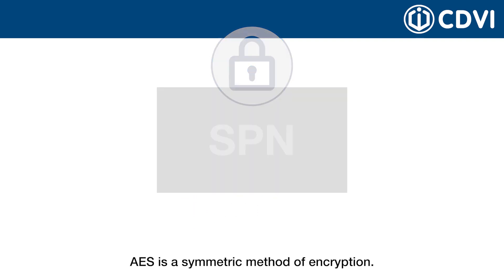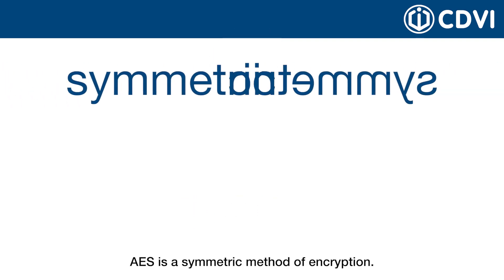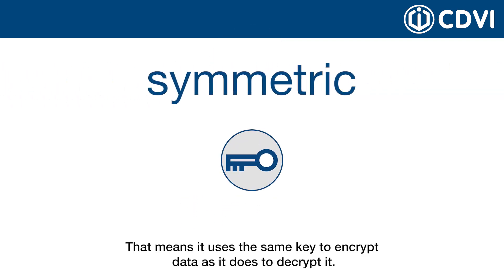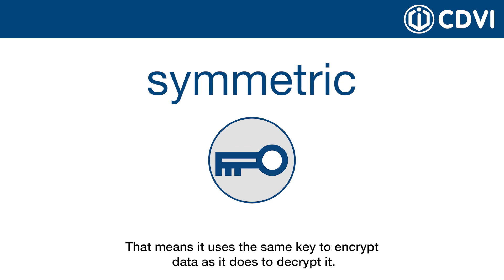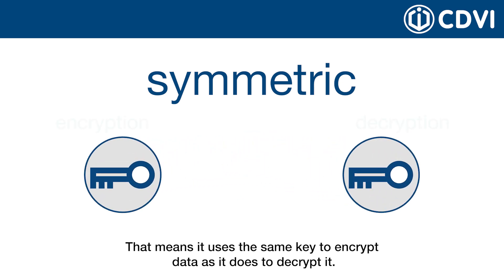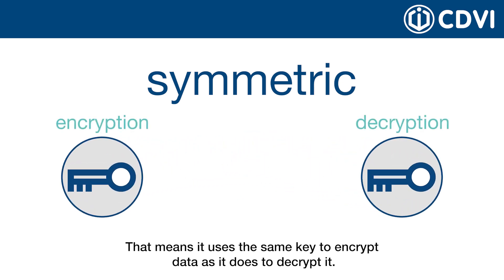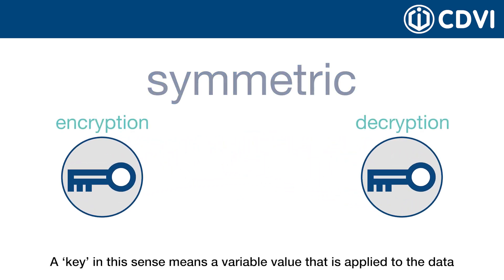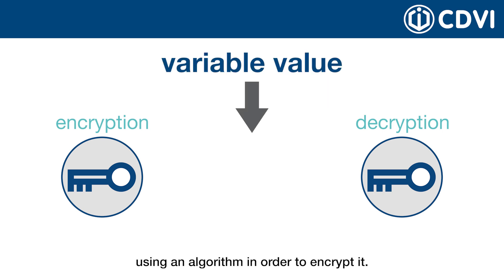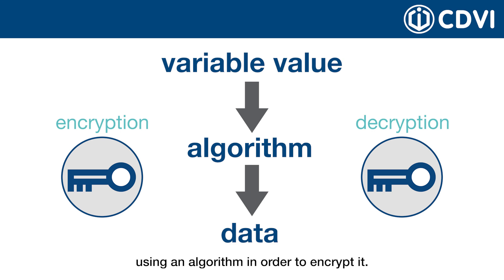AES is a symmetric method of encryption. That means it uses the same key to encrypt data as it does to decrypt it. A key, in this sense, means a variable value that is applied to the data using an algorithm in order to encrypt it.